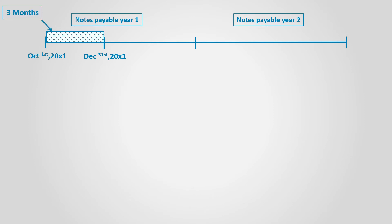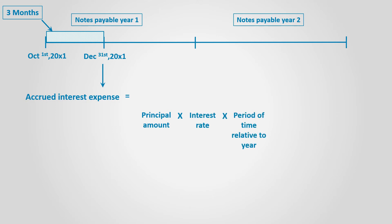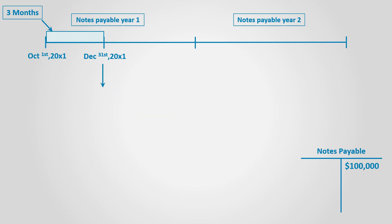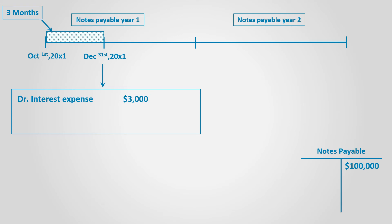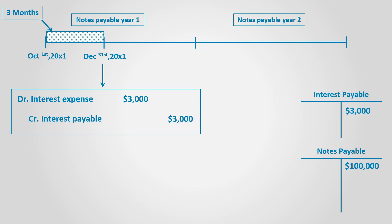At the end of the financial period, which is December 31st in our case, the business needs to make an adjusting entry to record the accrued interest that accumulated over time. To calculate the accrued interest, we multiply the principal amount by the interest rate by the period of time since the loan was received. The period here is three months from October 1st till December 31st. So accrued interest equals $100,000 × 12% × 3/12 = $3,000. The adjusting entry is to debit interest expense and credit interest payable, which is a liability to be paid later after nine months.